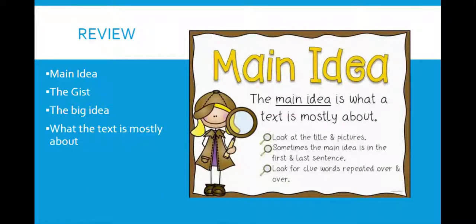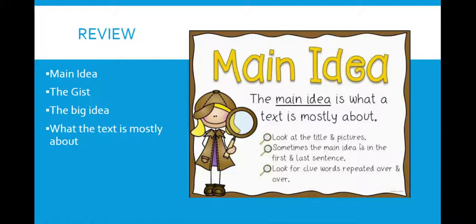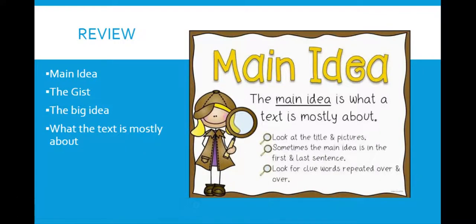So the main idea is the gist. It is the big idea and it is what the text is mostly about. So last time we talked about how key details are pieces of the text. Your main idea is going to be what all those key details have to do with. So if we look right here at this picture, the main idea is what a text is mostly about. We can look at the title and pictures. Sometimes the main idea is in the first and last sentence. And we can also look for clue words repeated over and over. If I'm ever moving too fast, or you want more time to think, you can always pause and you can also rewind and watch stuff again if you need to.